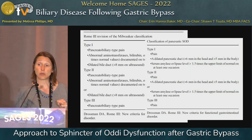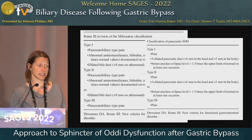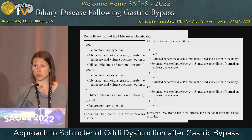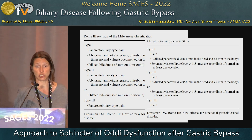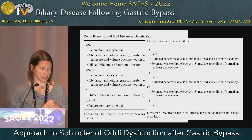This is the pancreatic version of that exact same classification. As compared to the dilation of the common bile duct, dilation of the pancreatic duct is the replacement there. Abnormal liver function tests is replaced by abnormal amylase and lipase levels.